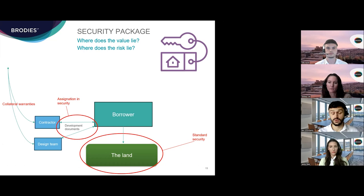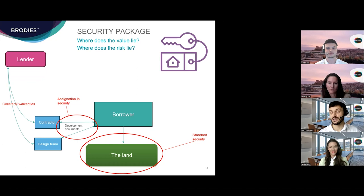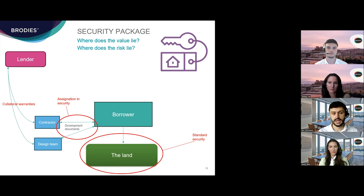There are therefore question marks from a legal perspective as to whether the contract has been truly assigned. If there is an event of default and the lender wants to assume full control, the assignation will arguably need to be re-intimated and re-registered — prior to this point the lender is at risk of an intervening insolvency event or an assignation to a third party acting in good faith. For these reasons, the lender may prefer in the first instance to seek a suite of its own collateral warranties from the principal contractor, design team, and key subcontractors.